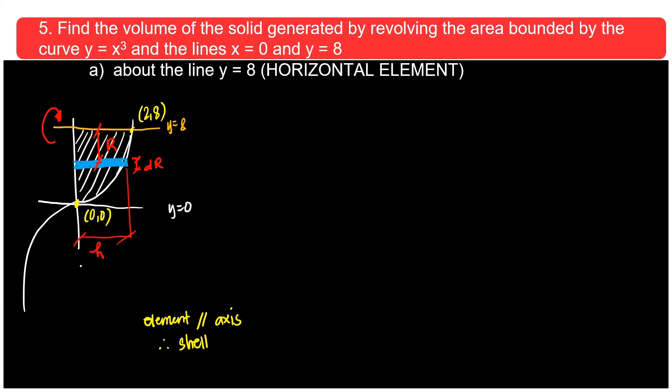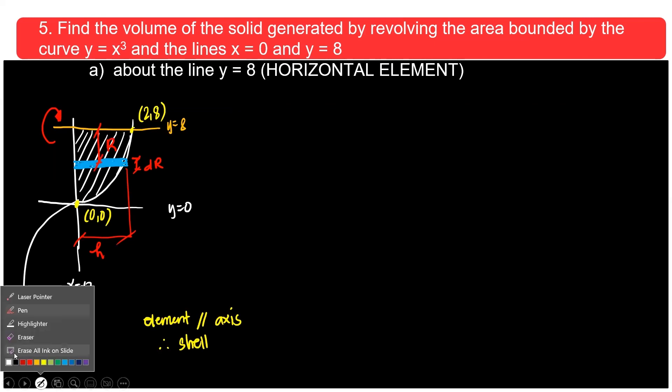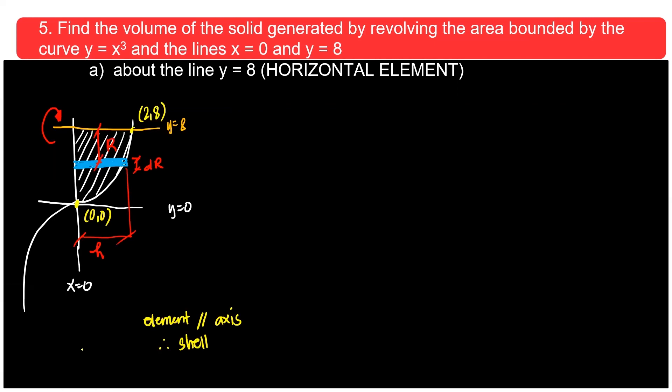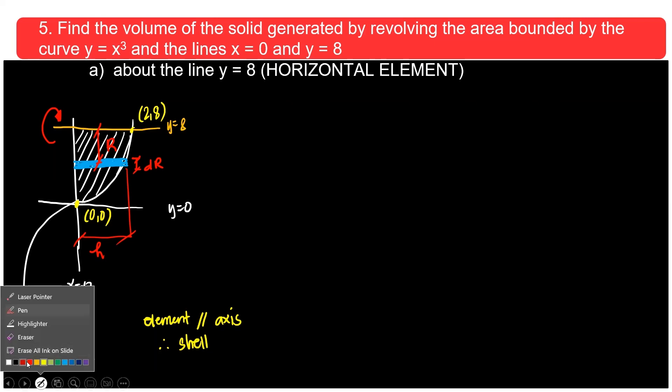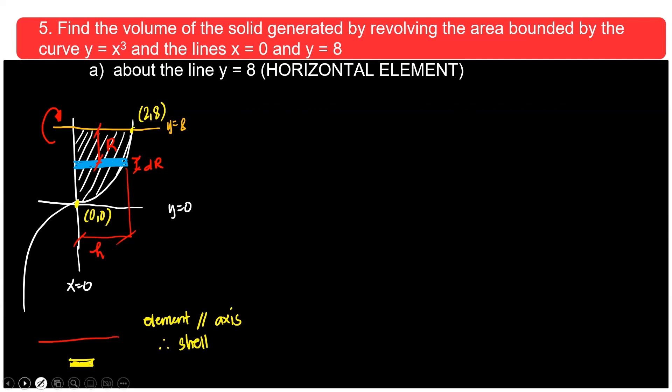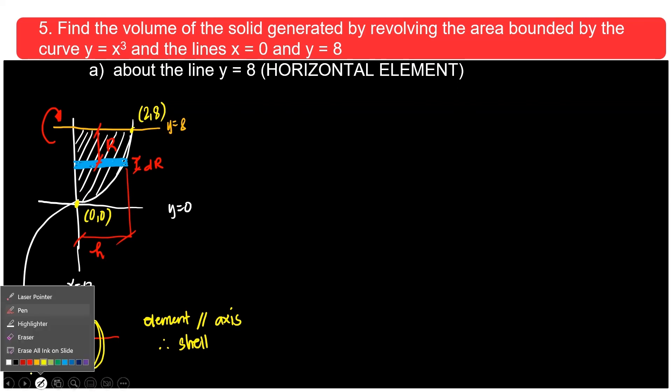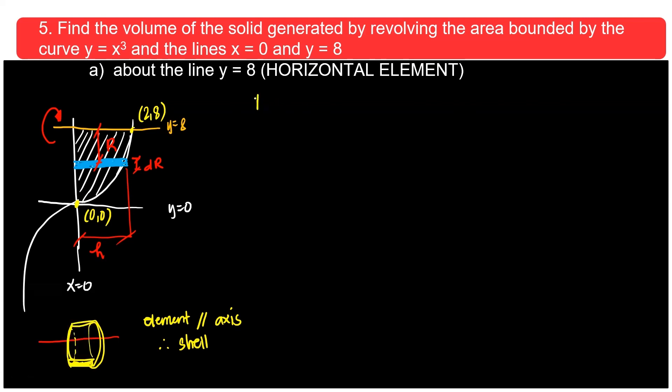This is y equals to 0. That's x equals to 0. How does it look like? If you revolve the element about the axis, which is ito, the one on top, you will form a shell. Ayan. So it's a cylindrical shell.